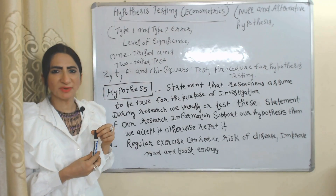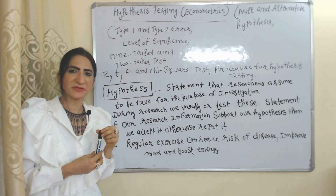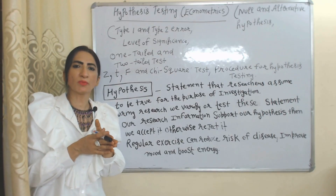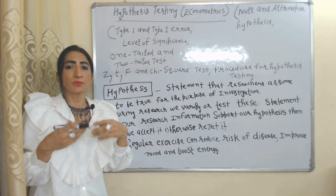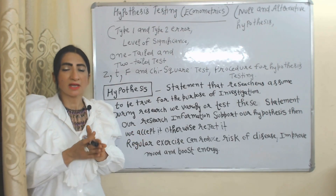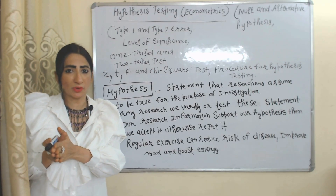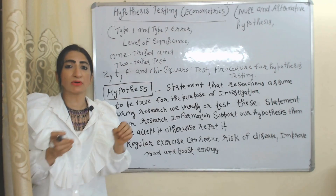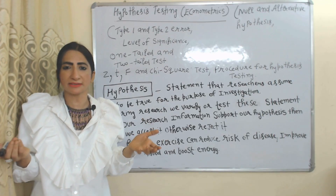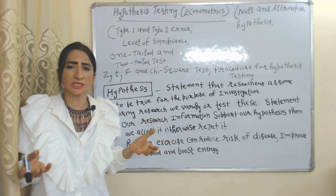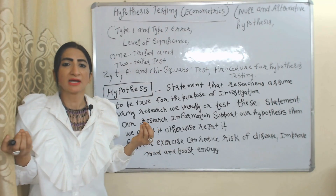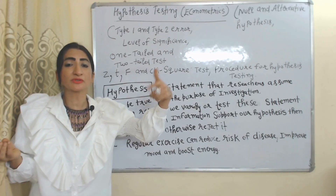Hello everyone, my name is Vinita. I hope you all are staying healthy. Today we are going to talk about hypothesis testing. We will see null and alternative hypothesis, type 1 and type 2 error, level of significance, one-tailed and two-tailed test, and we will also see what are Z, T, F, and chi-square tests.